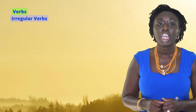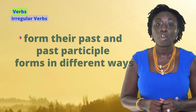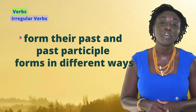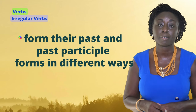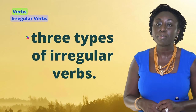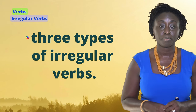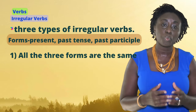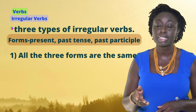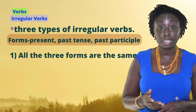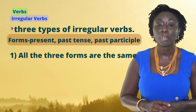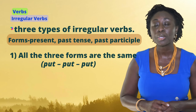Irregular verbs form their past or past participle form in different ways. There are mainly three types: verbs in which all three forms (present, past, past participle) are the same — for example, put, put, put. Verbs in which two of the three forms are the same — for example, sit, sat, sat. Verbs in which all three forms are different — for example, drink, drank, drunk.